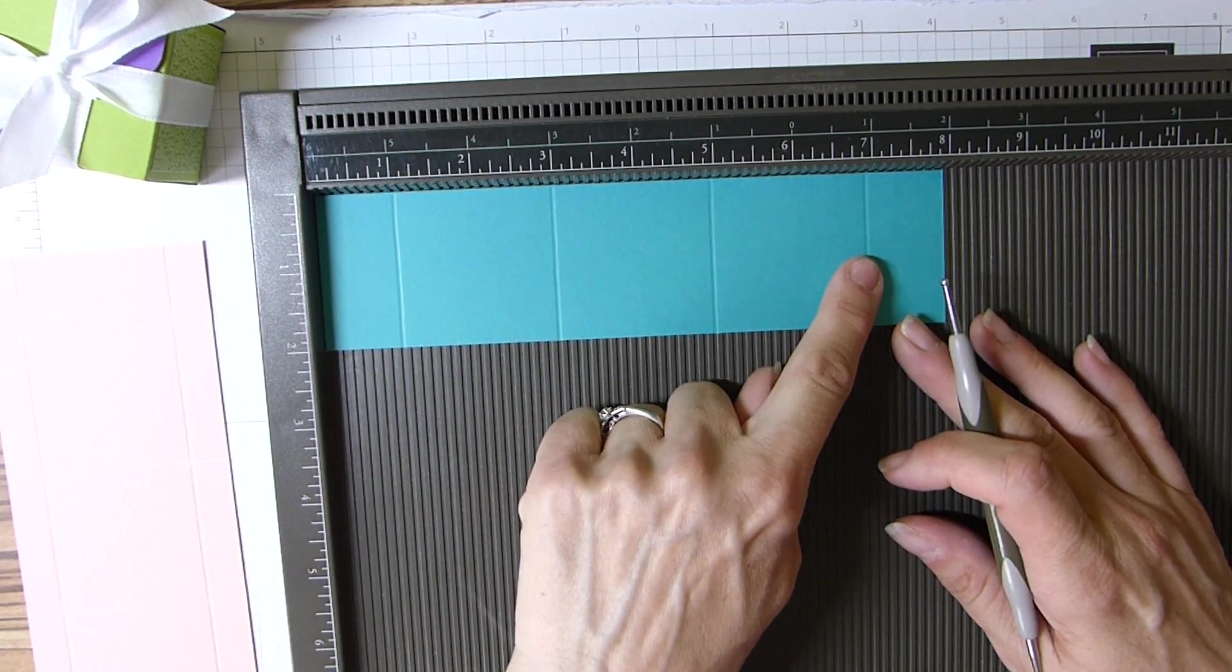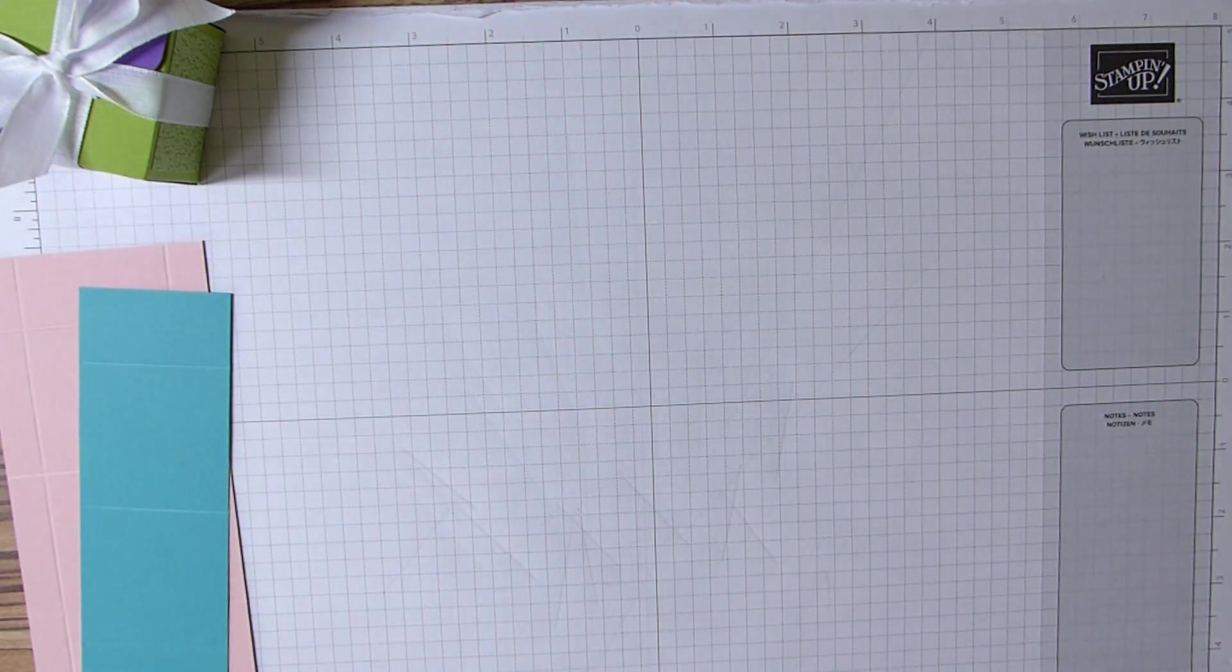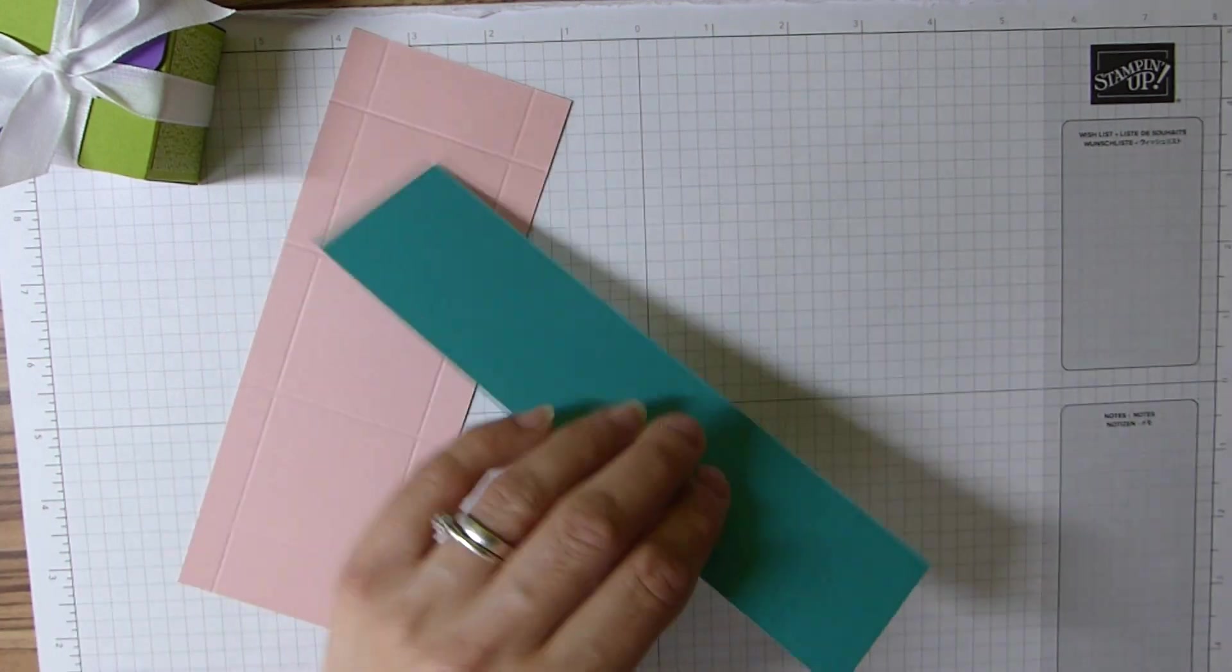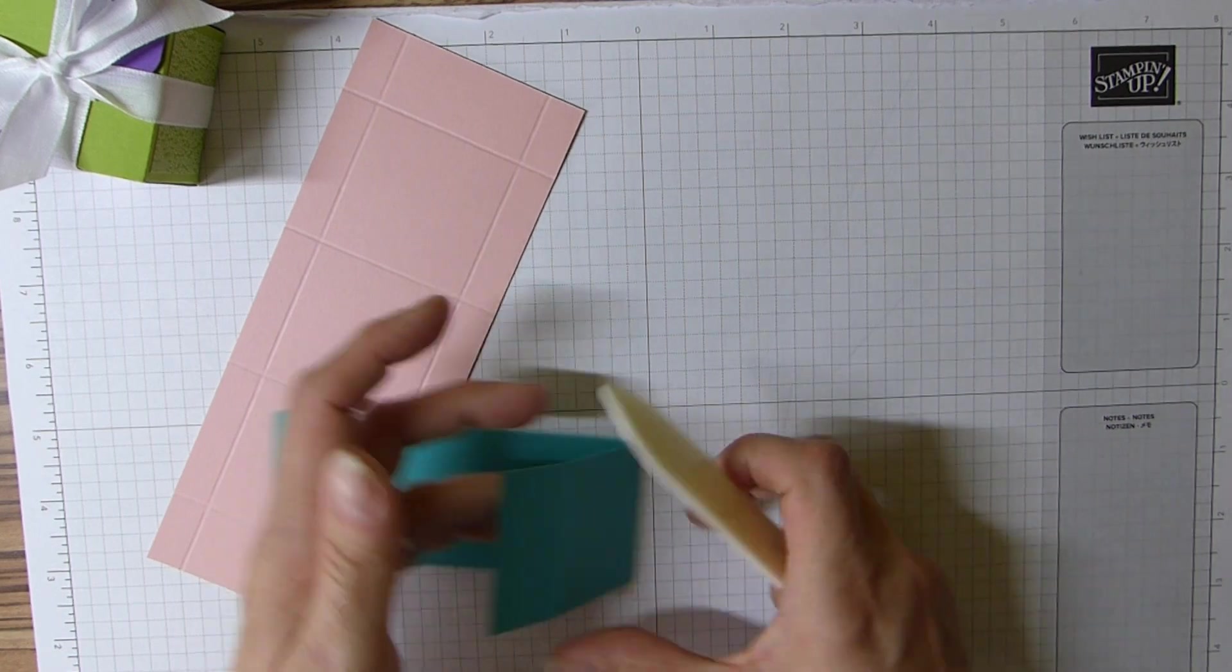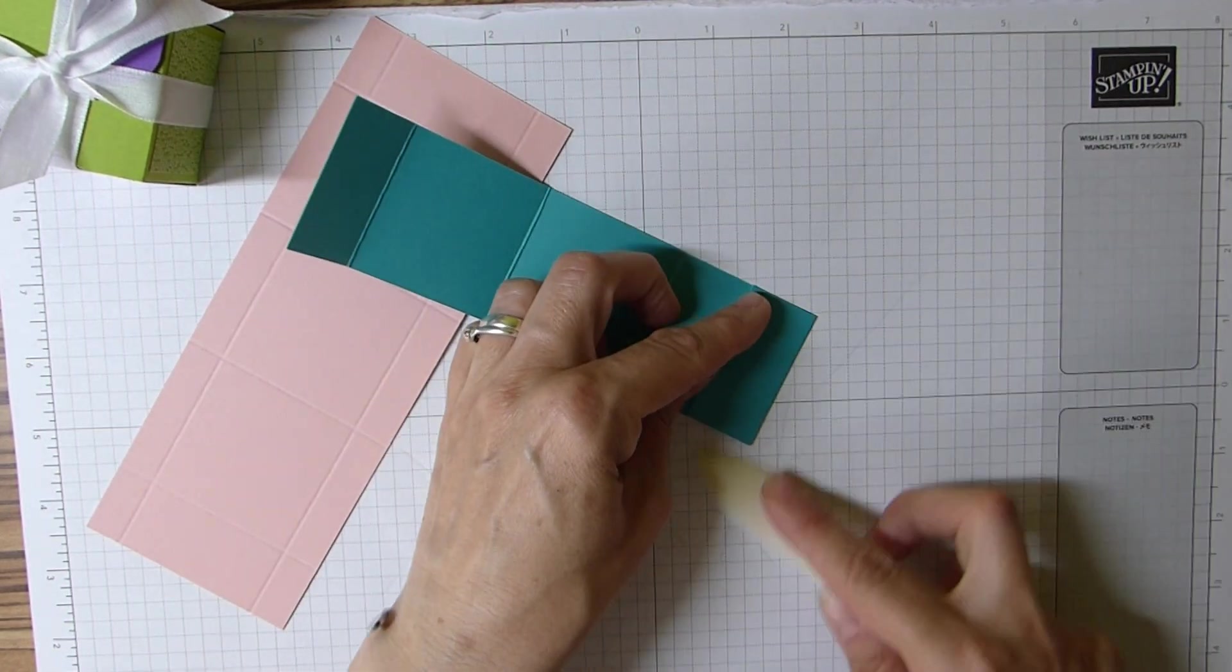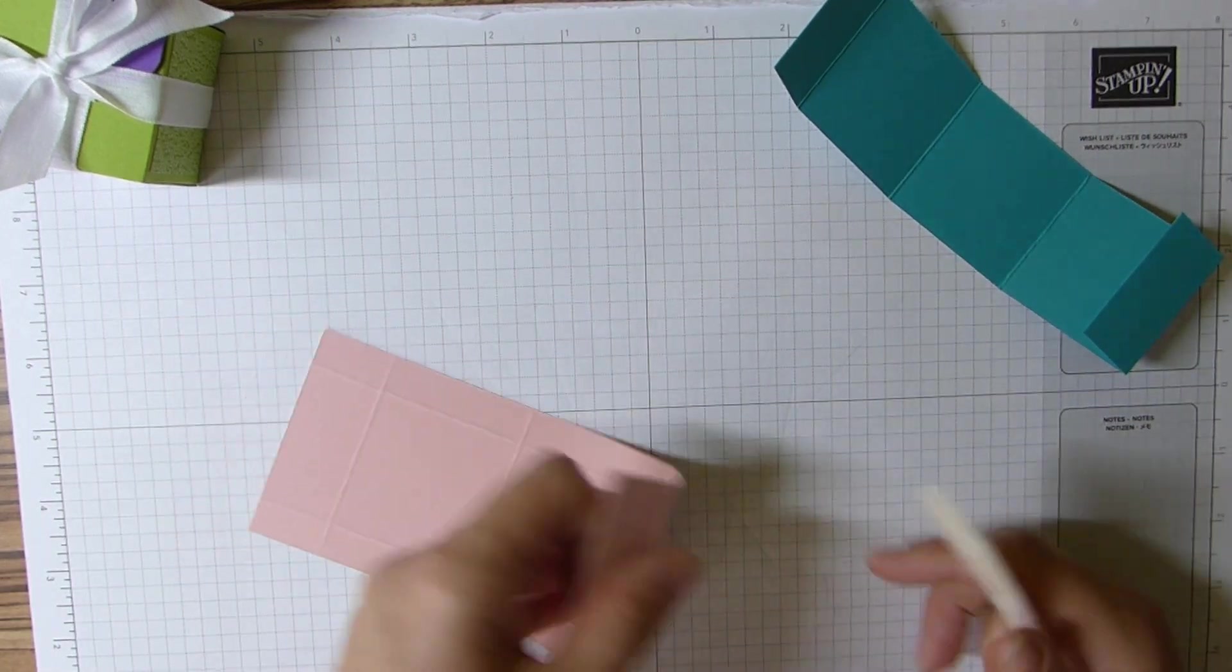That's the simple bit. The measurements will be on my blog, so don't panic if you didn't get them. Fold and burnish those score lines on both pieces.